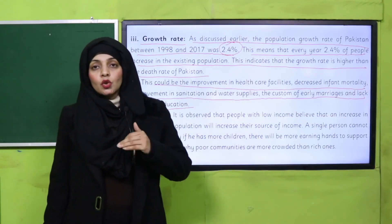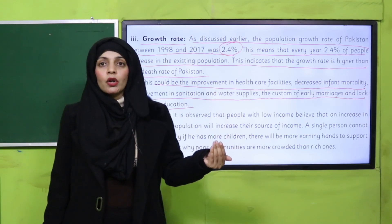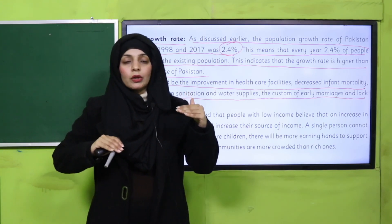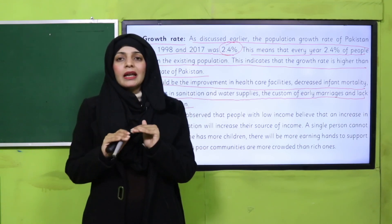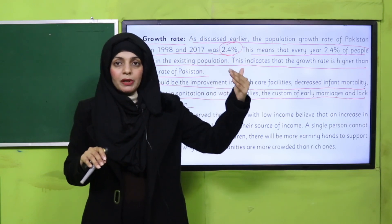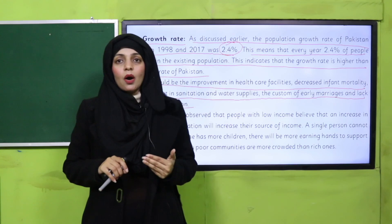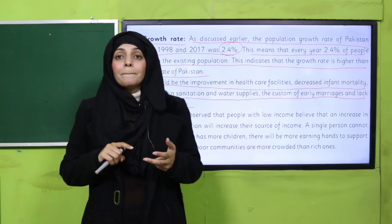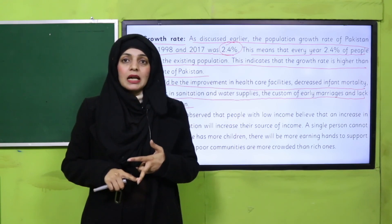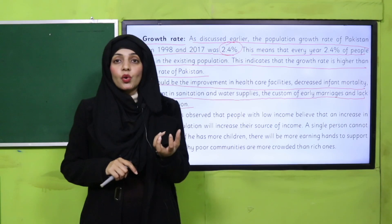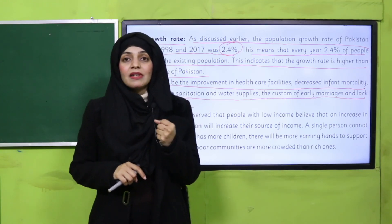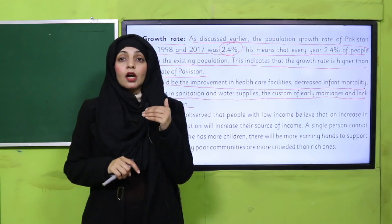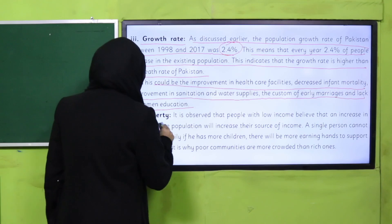Pakistan ka jo growth rate hai wo zyada hai — jab aapka growth rate zyada hoga aur death rate kam hoga, yani ki population mein izafah zyada ho raha hai. Jab population increase ho aur death rate kam ho, to education facilities, healthcare facilities aur awareness properly create nahi ho sakti. Iske alawa khawateen mein lack of awareness aur early marriage bhi is ki ek badi wajah hai jis ki wajah se Pakistan ka population growth rate bahut zyada hai.